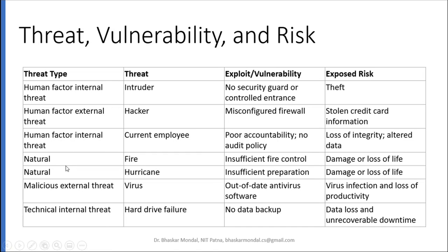There can also be natural phenomena or natural threats like fire and hurricane. Vulnerabilities include insufficient fire control and insufficient preparation, leading to damage or loss of life and data. Then malicious external threats like a virus — if out-of-date antivirus software is kept on the systems, that can be a vulnerability leading to virus infection and loss of productivity. Then technical internal threats like a hard drive failure — if there is no data backup, that can be a vulnerability, and due to hard drive failure there can be data loss and unrecoverable downtime, meaning availability is going to be hampered.